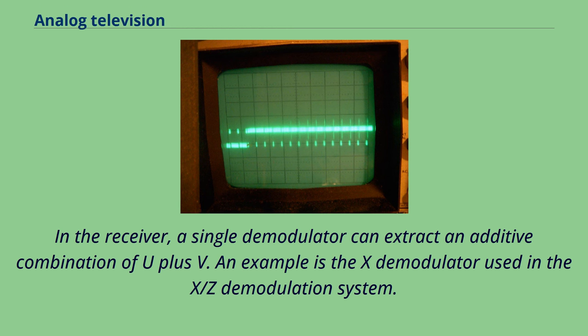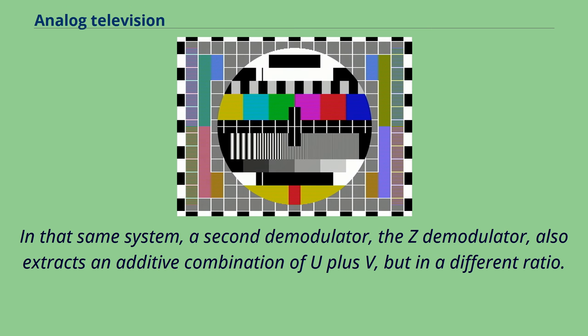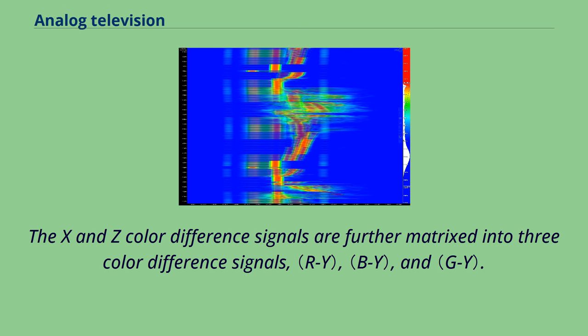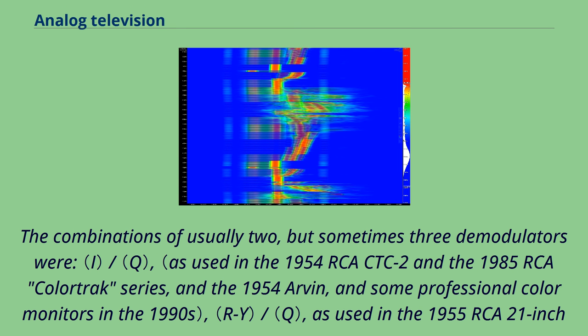The X and Z color difference signals are further matrixed into three color difference signals, and the combinations of usually two, but sometimes three demodulators were used in various receivers throughout the 1950s and 1960s.